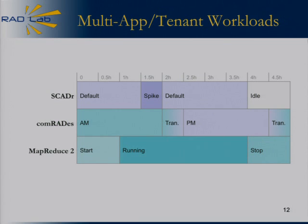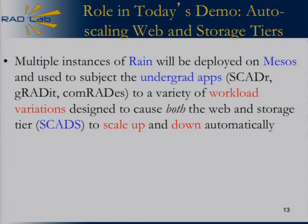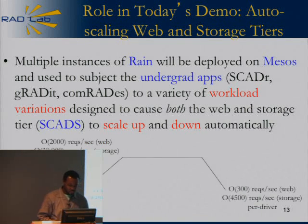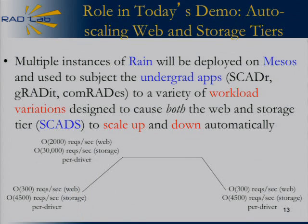This is an overview of what a multi-tenant or multi-app workload looks like. Every track can target a different system and experience its own variations. In today's demo, we'll deploy multiple instances of RAINN on the cluster targeting both Scatter and Comrades, subjecting them to workload variations intended to cause both the web tier and storage tier to scale up and scale down. The flight plan starts at roughly hundreds of requests per second at the web tier, scales up by an order of magnitude to thousands at the web tier and tens of thousands at the storage tier, then scales back down.